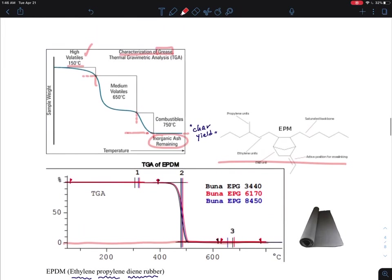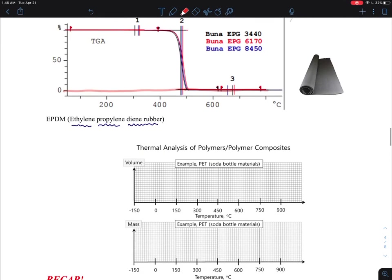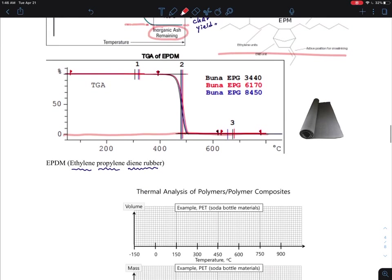But when you have a sample such as a grease, it might have inorganic fillers, and it might have actually quite polyaromatic compound that cannot be easily burned away. And then, then you have a, some residual mass.